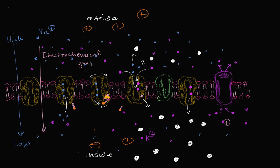The electrochemical gradient is a combination of the electric gradient and the chemical gradient. The chemical gradient: higher concentration on one side means net diffusion flows down. The electric potential: more positive on one side means positive ions want to move toward the less positive side. This gradient represents stored potential energy, and cells actually use the sodium electrochemical gradient as a source of energy.